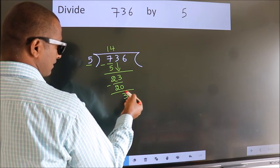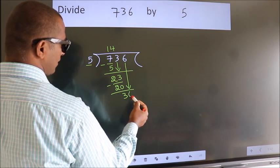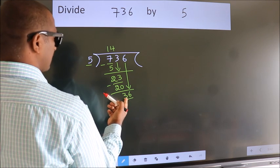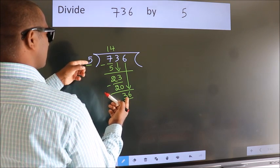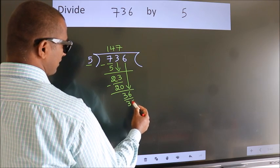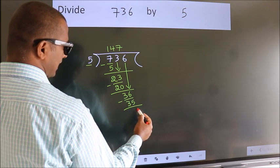After this, bring down the beside number. So 6 down. So 36. A number close to 36 in 5 table is 5 7s 35. Now we subtract. We get 1.